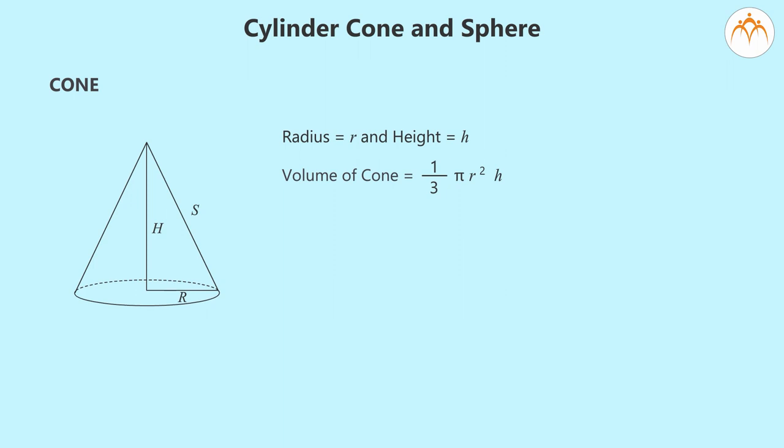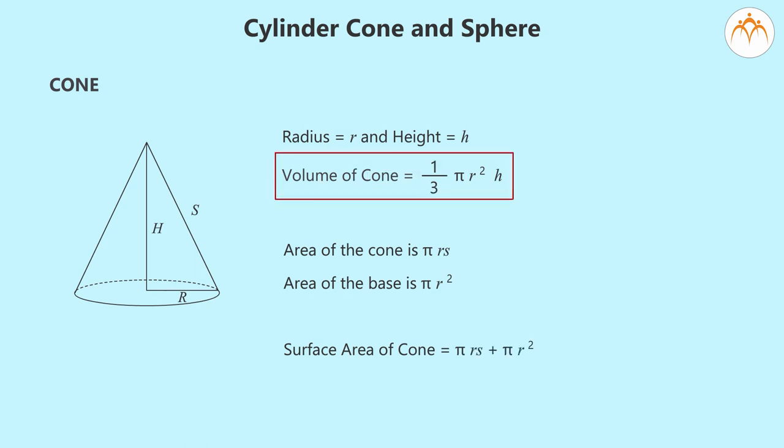The formula for the volume of the cone with base radius r and height h is 1/3 πr²h. For surface area, we need to calculate the surface area of the cone and the base. The area of the cone is πrs. Area of the base is πr². So surface area equals πrs + πr².